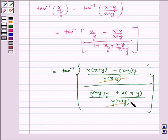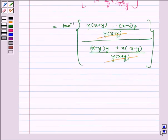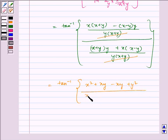This gets cancelled. So we are left with tan inverse x squared plus xy minus xy plus y squared divided by xy plus y squared plus x squared minus xy.